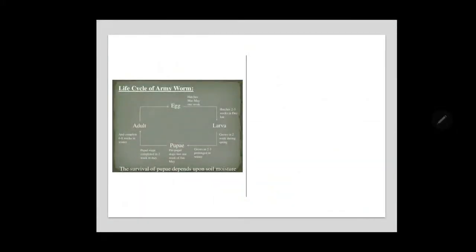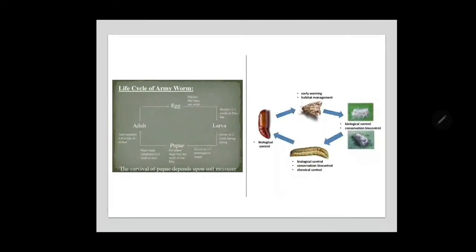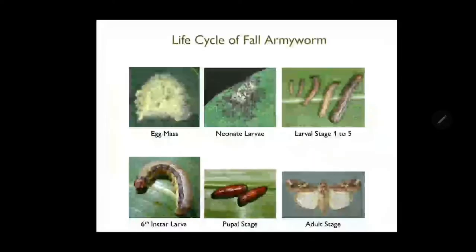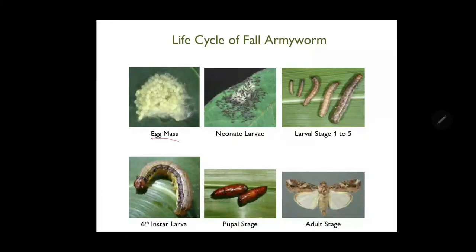Its life cycle starts with laying eggs in masses on the underside of the leaf. This egg mass contains about 350 eggs in one cluster, with 1 to 2 overlapping layers of eggs. In the gregarious phase or higher reproductive rate, this pest can lay about 1000 eggs. This is a neonate larva, meaning a 1st instar larva, just after hatching from the egg.